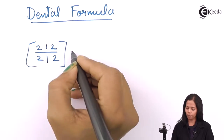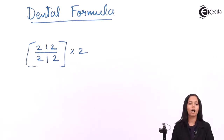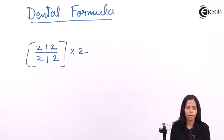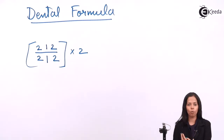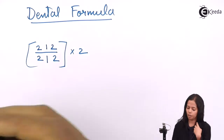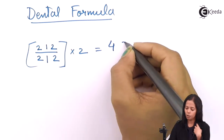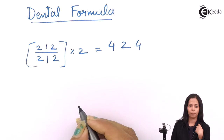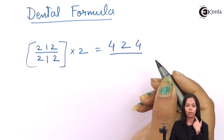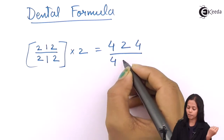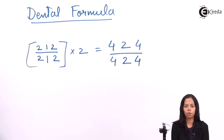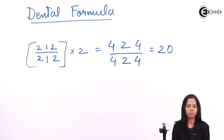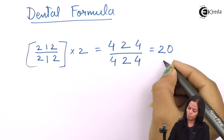The whole number is multiplied by two. The above numbers are multiplied by two and the below numbers are also multiplied by two. So this half-set is two incisors, one canine, and two molars. If we calculate the complete set, that comes to four incisors, two canines, and four molars. The same goes for the lower jaw — four incisors, two canines, and four molars. If you add these numbers, the total you get is twenty. So twenty teeth are present as milk teeth.